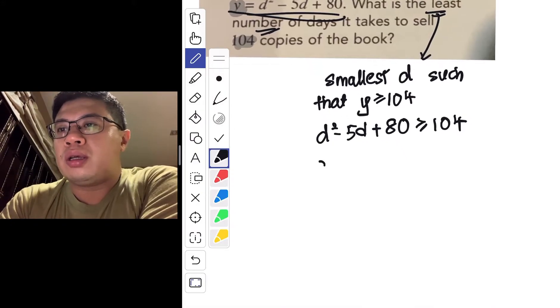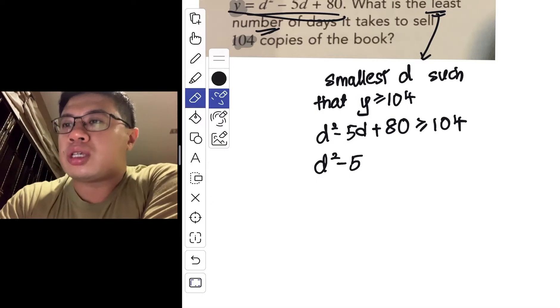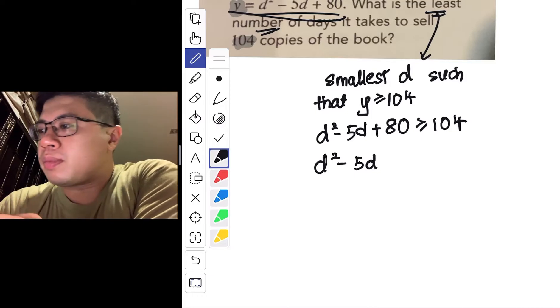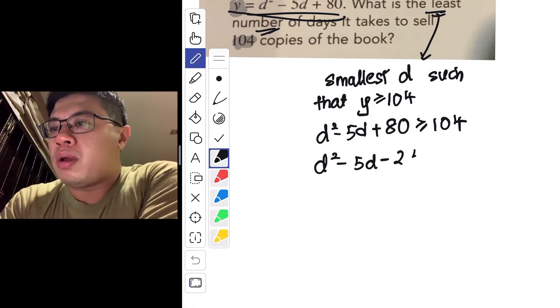Okay, now here, if I take d squared minus 5d, let me just edit because I'm writing on the screen, so my handwriting may be a bit ugly. 80 minus 104, that will give me minus 24